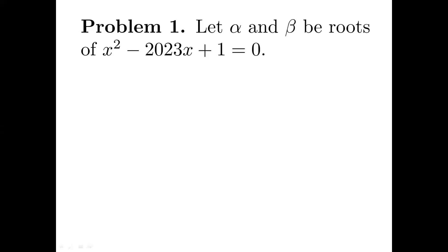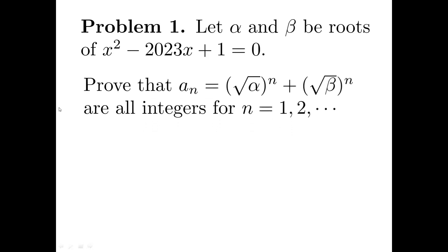I am going to solve three problems in this video. The first one: let alpha and beta be roots of a quadratic polynomial x squared minus 2023x plus 1. Define a sequence A of n equals the square root of alpha raised to the power n plus the square root of beta to the power n. I am going to prove that all the numbers in the sequence are integers.